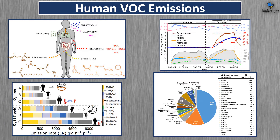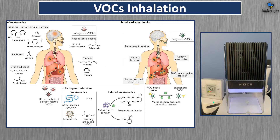Human VOC emissions. When we emit VOCs, it comes from our breath, saliva, skin, feces, blood, and urine. We emit VOCs — this is something people need to fully accept as part of their indoor air quality. We inhale VOCs and we exhale VOCs. They actually have VOC sensors that can detect the VOCs we exhale and try to determine if we are suffering from a disease — certain diseases make you emit certain VOCs. This is very premature technology, but something I think is pretty cool.